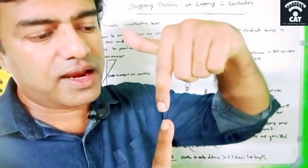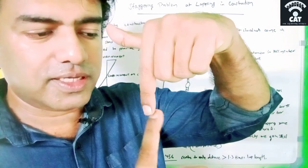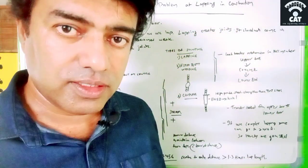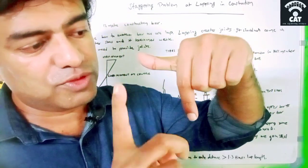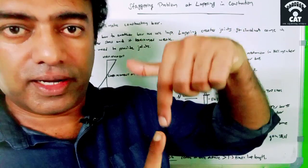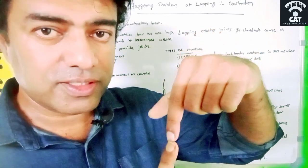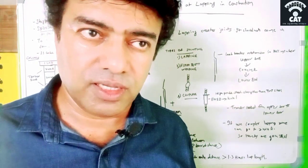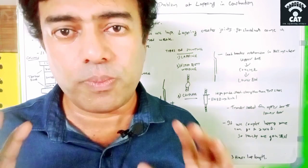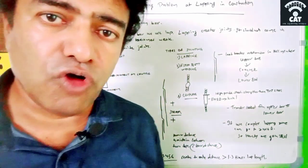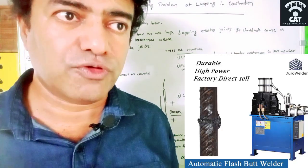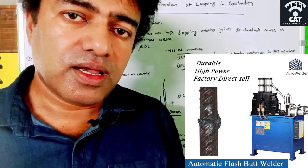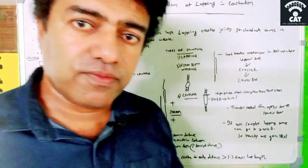In a coupler, the load transfers directly from the first bar to the bottom bar through about 50 mm of coupler length. In lapping, force goes from bar to concrete to bar; in coupling it is direct. For welding, the tensile strength and properties of the steel change, so welding is not advisable unless you use flash butt welding, which IS code permits.